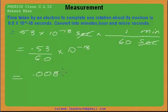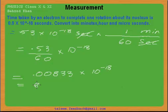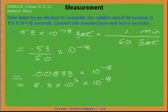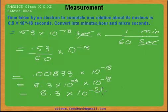We get 8.3 into 10 to the power minus 18. Since the bases are the same, we add the powers. So the result is 8.3 into 10 to the power minus 21 minutes.